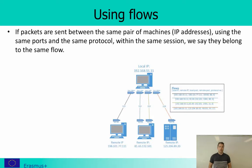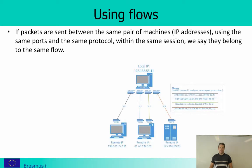Usually what we are doing is looking at flows — packets sent between the same pair of machines, using the same IP addresses, the same ports, and the same protocol. Within the same session, this would be a single flow. As shown here, a local IP address might be communicating with three different remote servers. To another server, if communicating on different ports, those would be different flows — so even with this definition, multiple flows can go to and from the same machine.